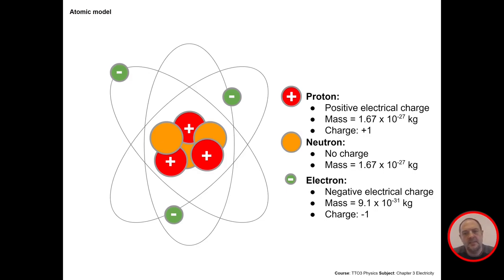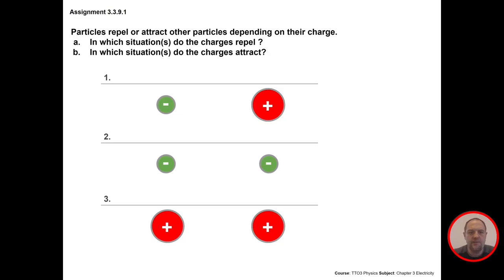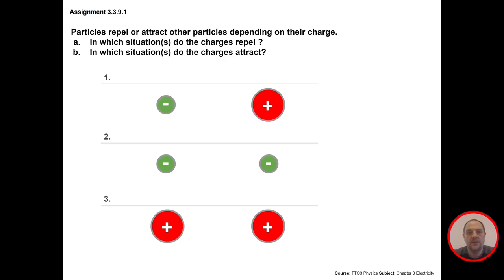Let's see how it works with positive and negatively charged particles. I have three situations and the question is: particles repel or attract other particles depending on their charge. In which situations do the charges repel? And in which situations do the charges attract? Please stop the video and try to answer this question yourself.